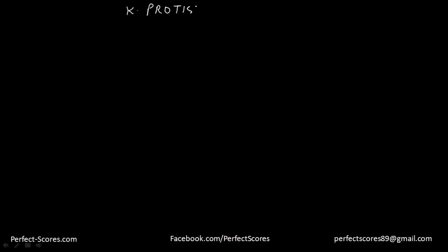The next important kingdom is kingdom Protista. Kingdom Protista has all single-celled eukaryotes. There are lots of different further categories. For example, the first one is chrysophytes.